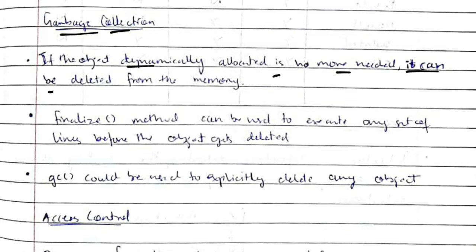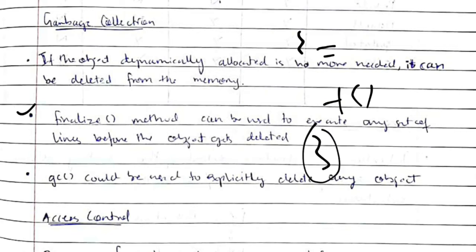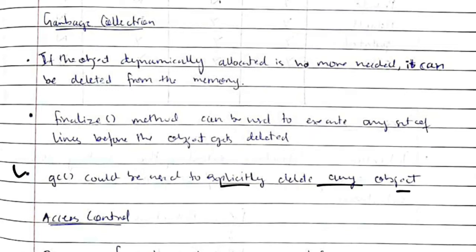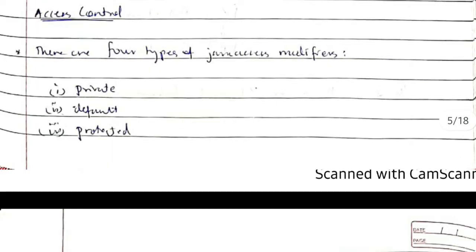Once we are done with an object that was dynamically allocated, it can be deleted from memory. There are two ways to handle this. First, 'finalize' — it is not for deleting but for executing code before the object gets deleted, such as printing a message like 'object is getting deleted'. Second, 'gc' (garbage collector) can be called explicitly to clear the object from memory. If neither is called, the program will automatically delete the object after it goes out of scope.